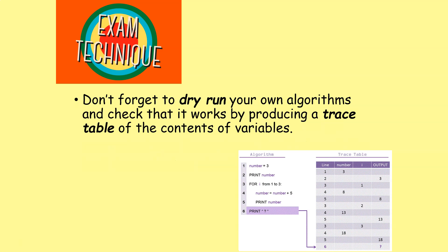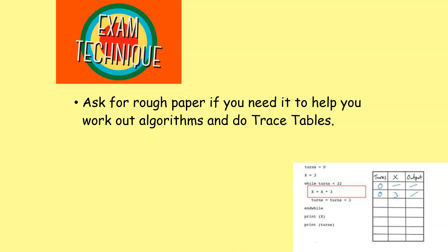Don't forget to dry run your own algorithms and check that they work by producing a trace table of the contents of the variables. It only takes a minute or two, and if you've got some time, use it wisely. Ask for rough paper if you need it to help you work out algorithms or do some trace tables.